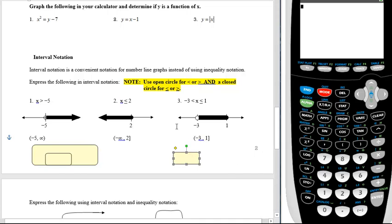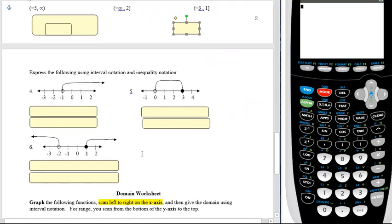You just indicate where the shading starts, where it ends, and it's always left to right. You always use parentheses around infinity or negative infinity and a bracket when you have a solid dot. So I've got some more problems down here.